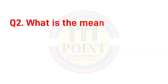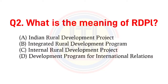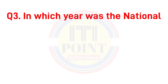What is the meaning of IRDP? A) Indian Rural Development Project, B) Integrated Rural Development Program, C) Internal Rural Development Project, D) Development Program for International Relations. The correct answer is option B: Integrated Rural Development Program.